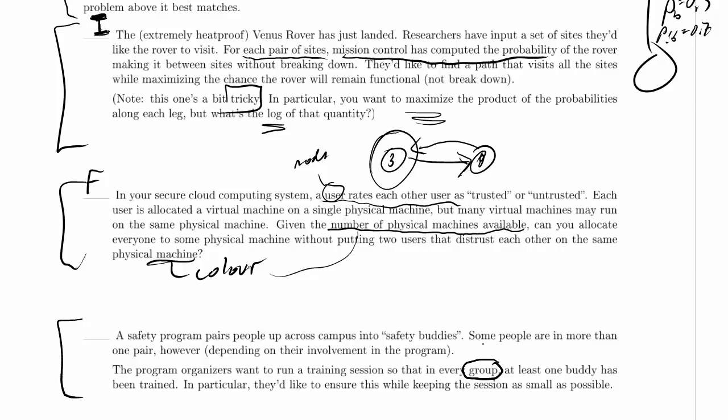But if you're going to insist that every non-empty subset of the original set has at least one trained buddy in it, that includes each of the sets that just contains one person in it. In that case, you're going to have to train everybody anyway. So the only reasonable interpretation here is that this should really be every pair of buddies.